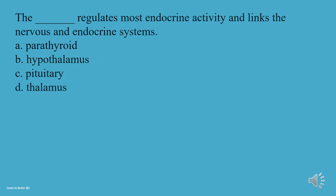What regulates most endocrine activity and links the nervous and endocrine systems? A, Parathyroid. B, Hypothalamus. C, Pituitary. D, Thalamus. The answer is B, Hypothalamus.